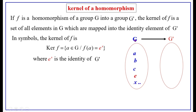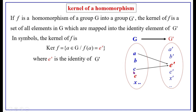Consider the group G having elements A, B, C, E, X, Y, Z, and so on. The group G' has elements A', B', E', C', X', and so on. Assume that E' is the identity element of G'. Now assume that F(A) = E', F(C) = E', F(E) = E'. Note that F(E) must always equal E', because in homomorphism,